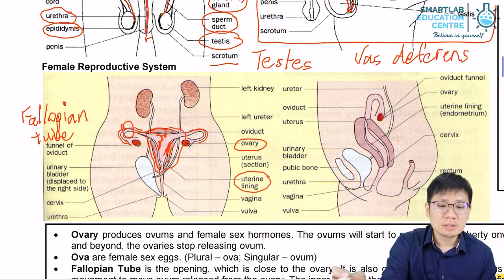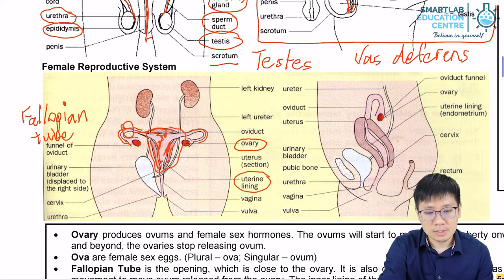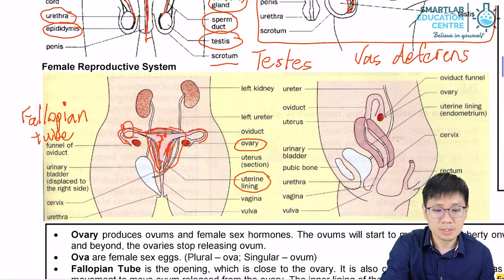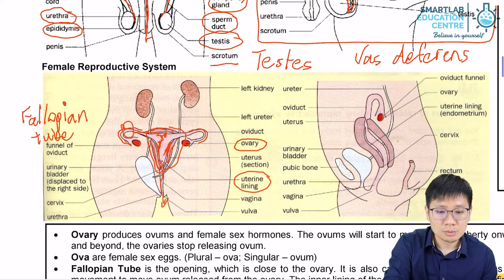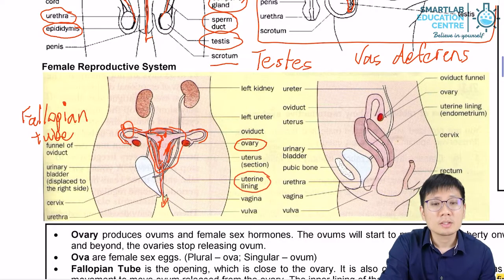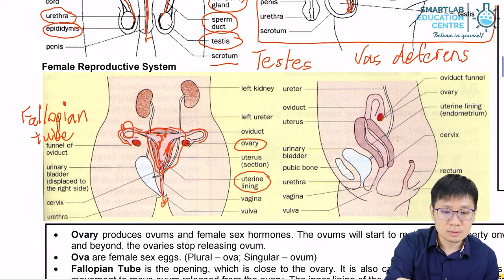The uterine lining, however, will break down if there is no fertilization at the end of every menstrual cycle. When it breaks down, the contents will pass through the region below the uterus.